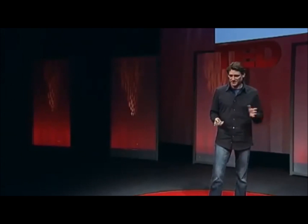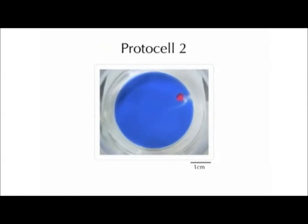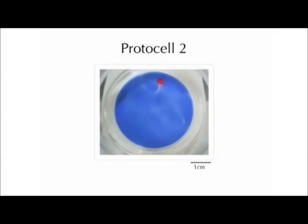So we came up with a different protocell model — actually simpler than the previous one. It's just an oil droplet with a chemical metabolism inside that allows the protocell to use energy and actually become dynamic. We add the droplet to a pool of water and the protocell starts moving itself around in the system. It forms through self-assembly, has a chemical metabolism inside, and uses that energy to move around in its environment.